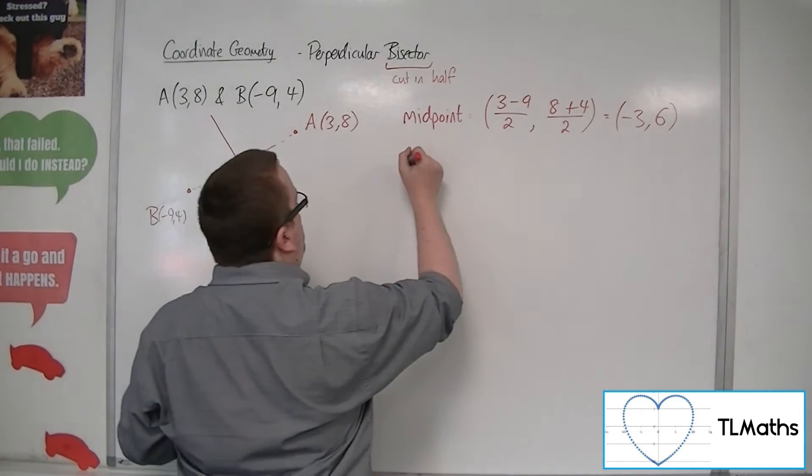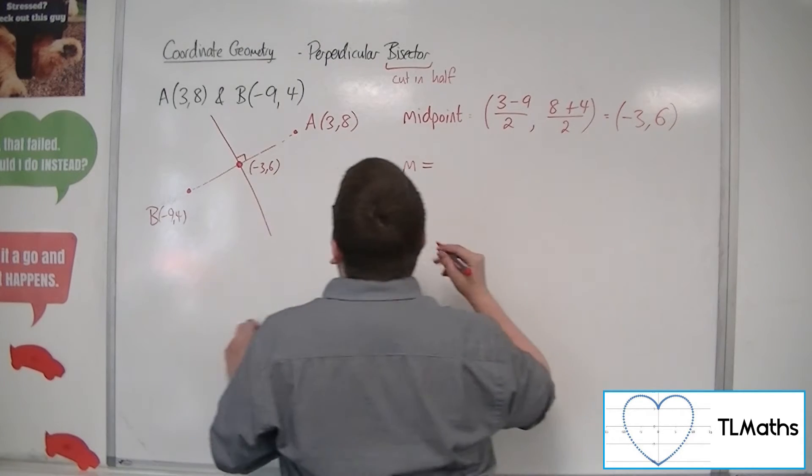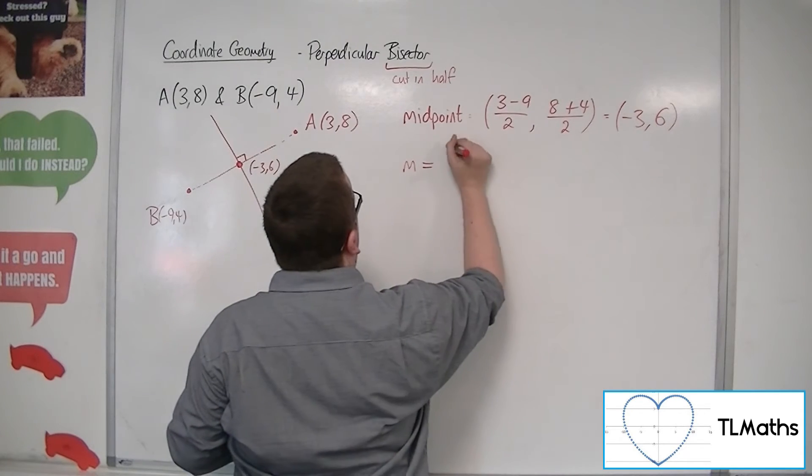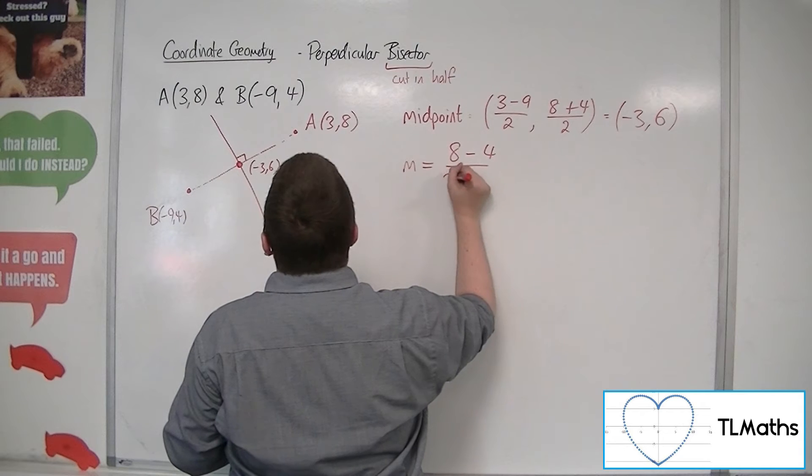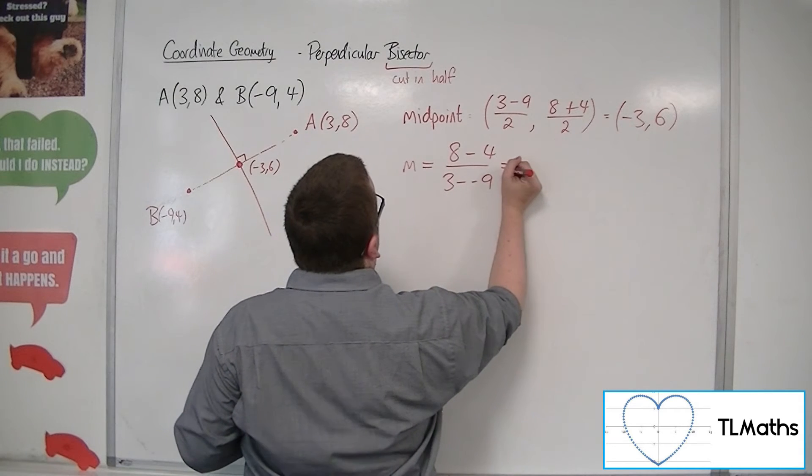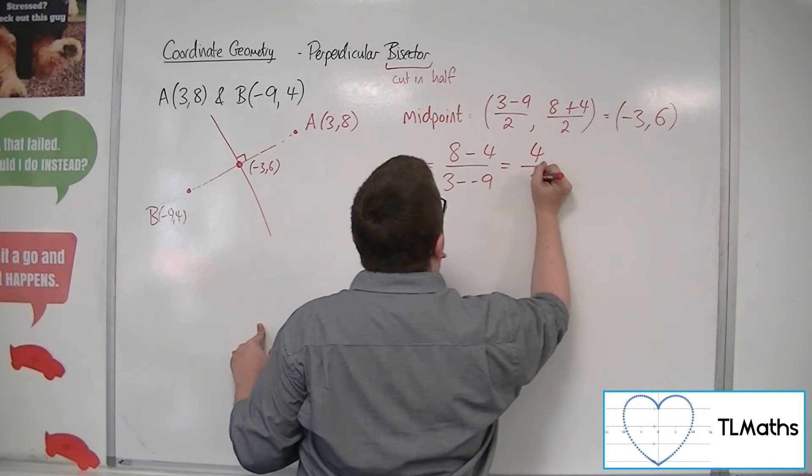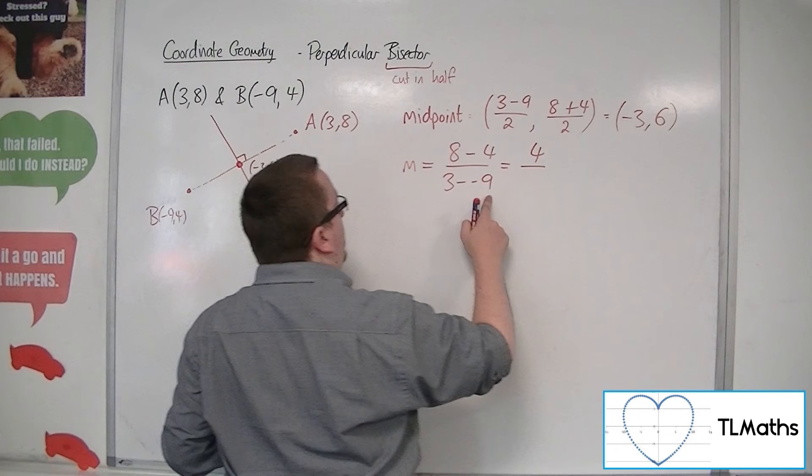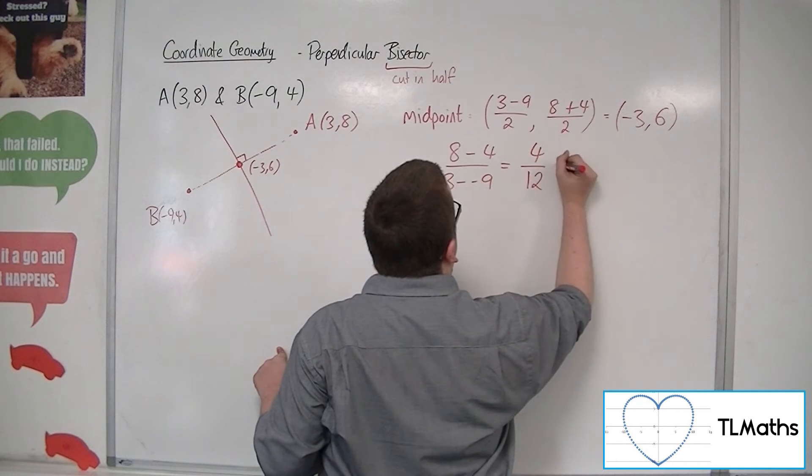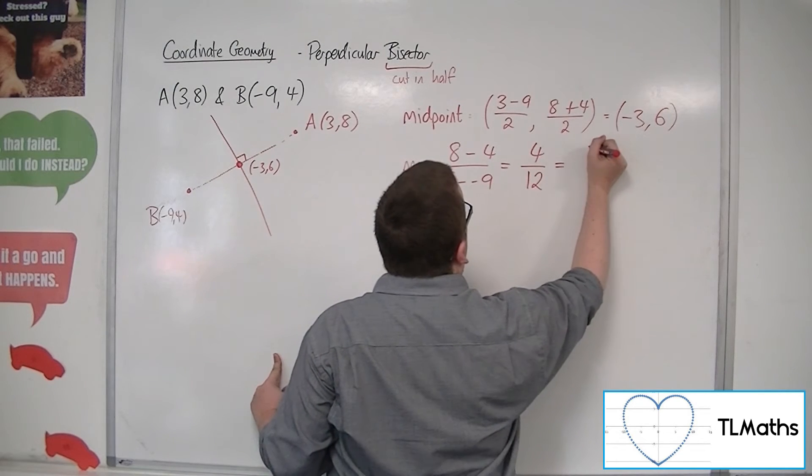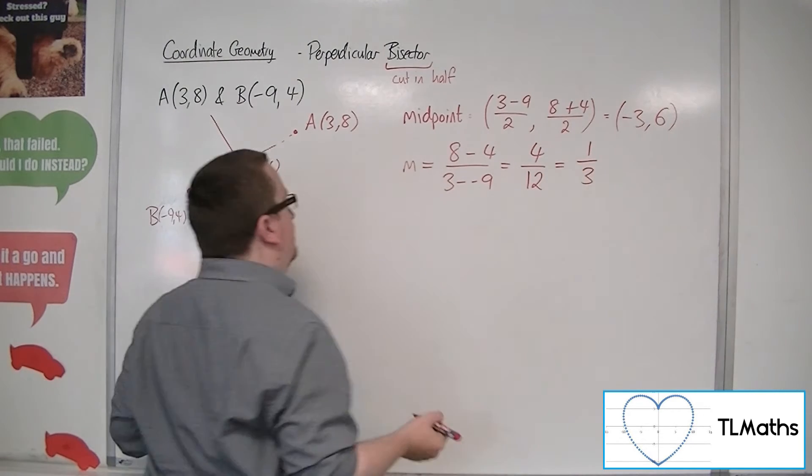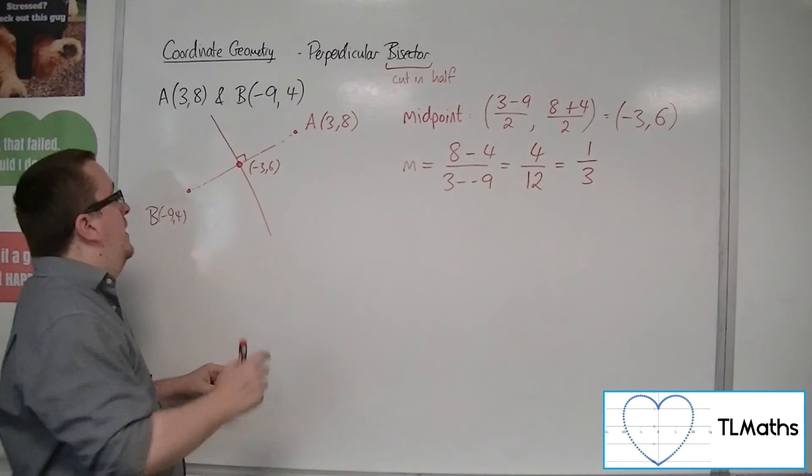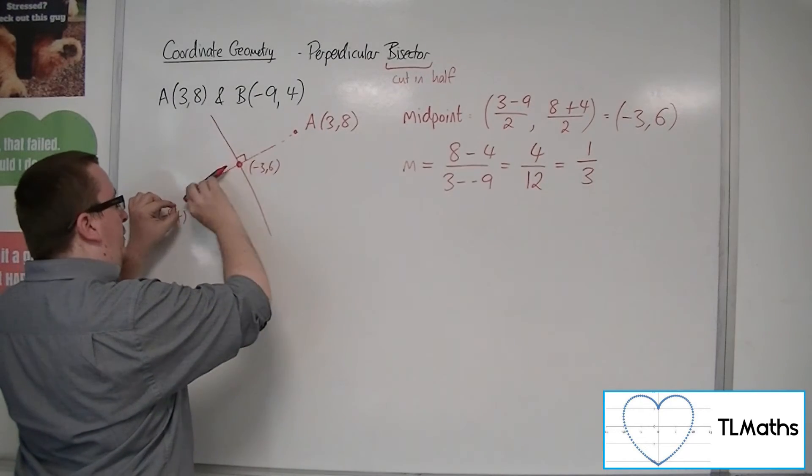So the gradient of the chord can be found by finding the difference in the y-coordinates divided by the difference in the x-coordinates. So I'm going to have 4 in the numerator and 3 plus 9, so 12 in the denominator. So 4 over 12 is 1 third.